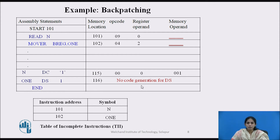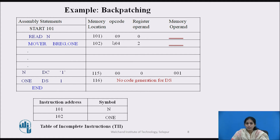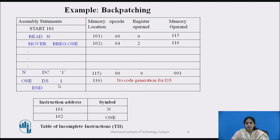After processing the END statement, the assembler processes each entry in the TI table. For the entry at instruction address 101 with symbol N: it goes to that memory location and fills in the address of N, which is 115. For the entry at instruction address 102 with symbol A: it goes there and fills in the address of A, which is 116.